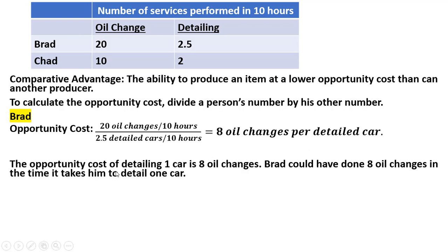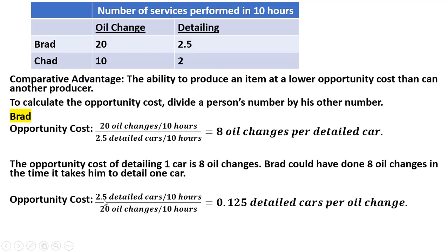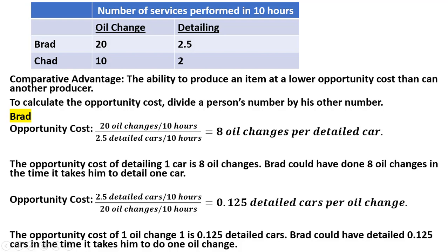That means the opportunity cost of detailing one car is 8 oil changes — Brad could have done 8 oil changes in the time it takes him to detail one car. Now we reverse the numbers, dividing 2.5 by 20. The 10 hours cancel again, giving 2.5 divided by 20, which is 1/8 or 0.125 detailed cars per oil change. The opportunity cost of one oil change is 0.125 detailed cars — Brad could have detailed 0.125 cars in the time it takes him to do one complete oil change.